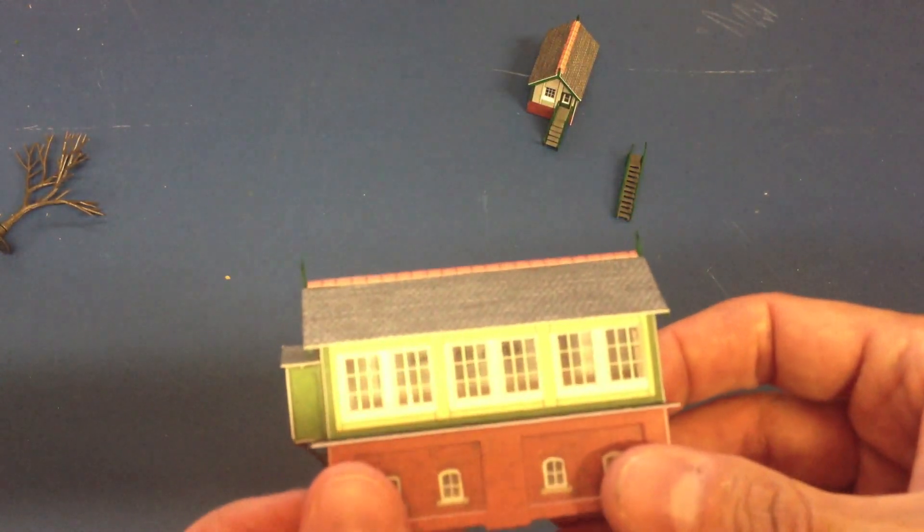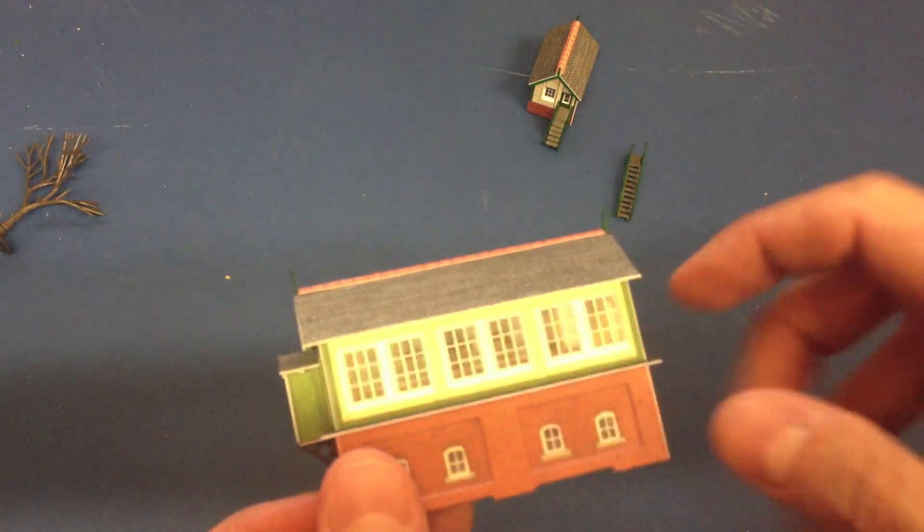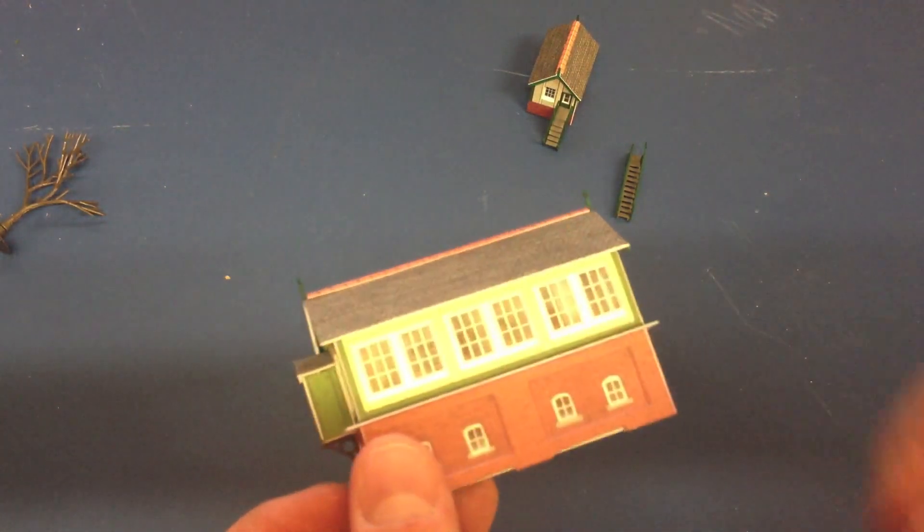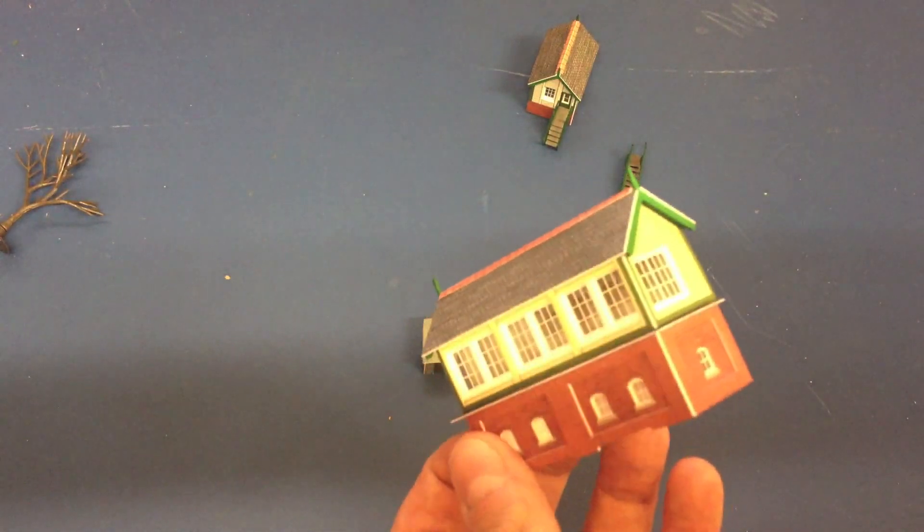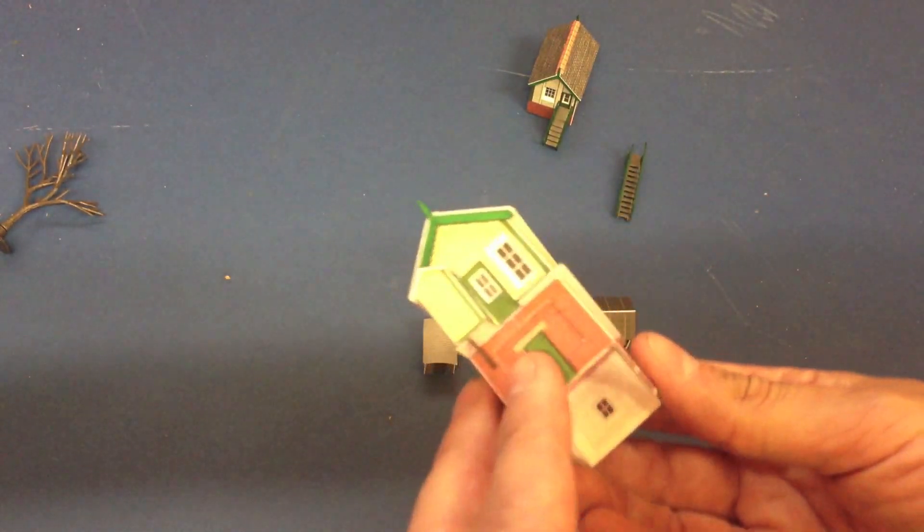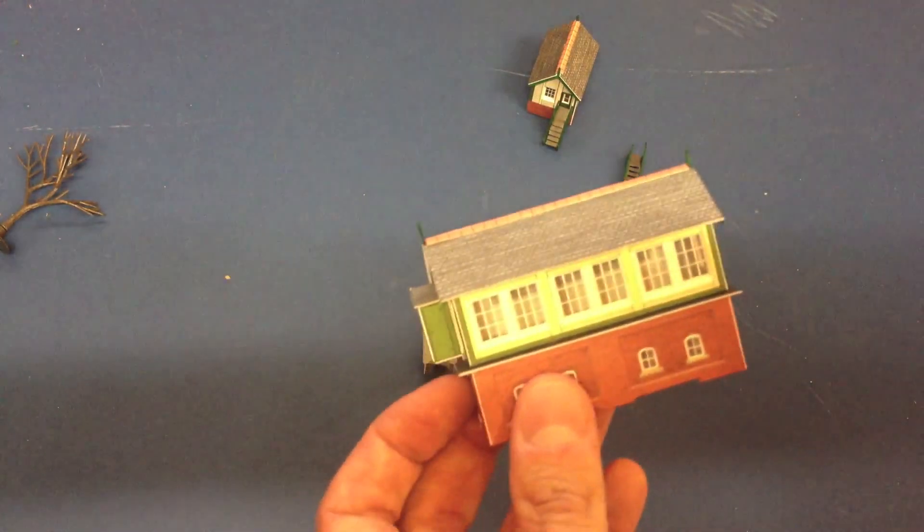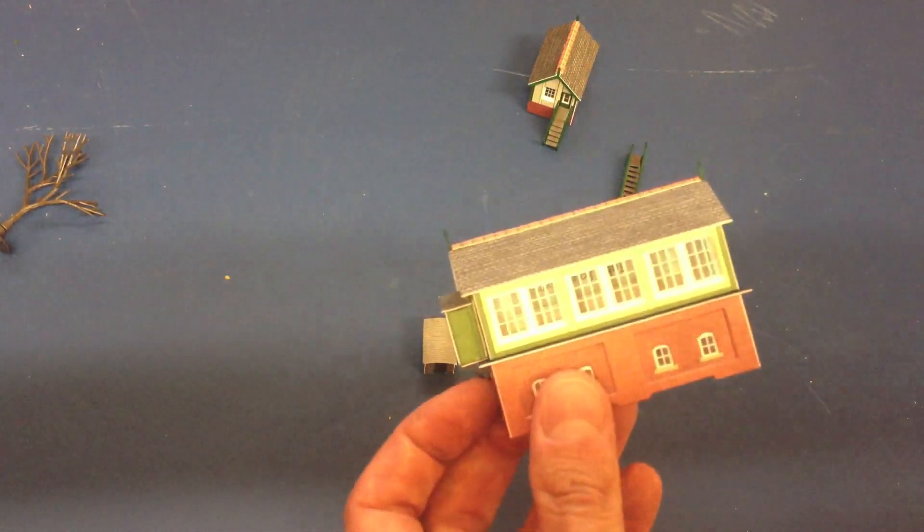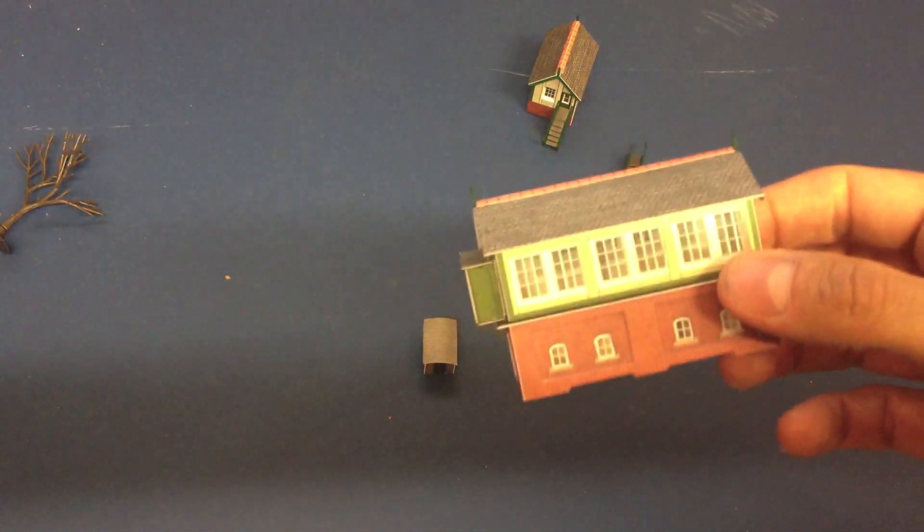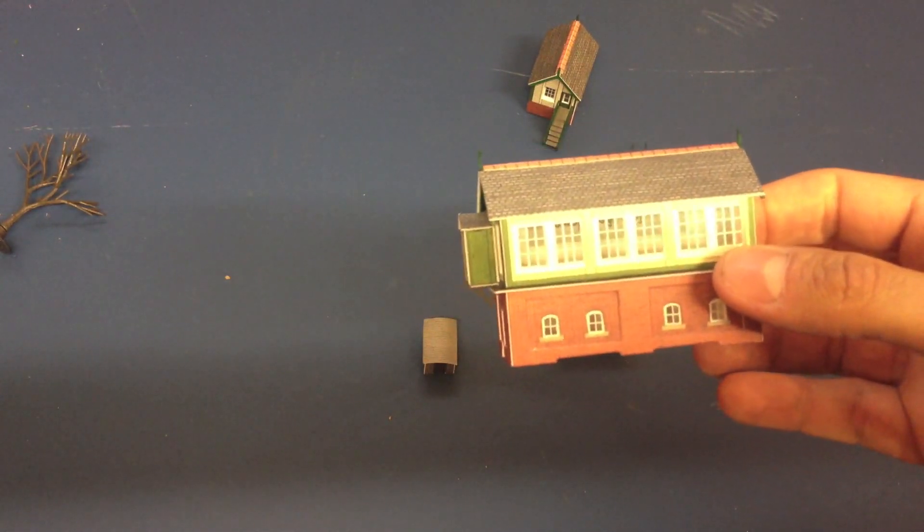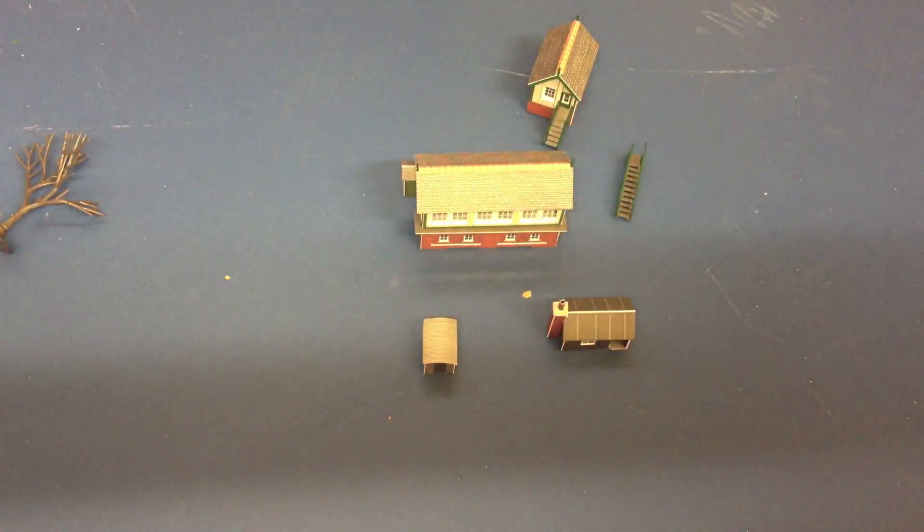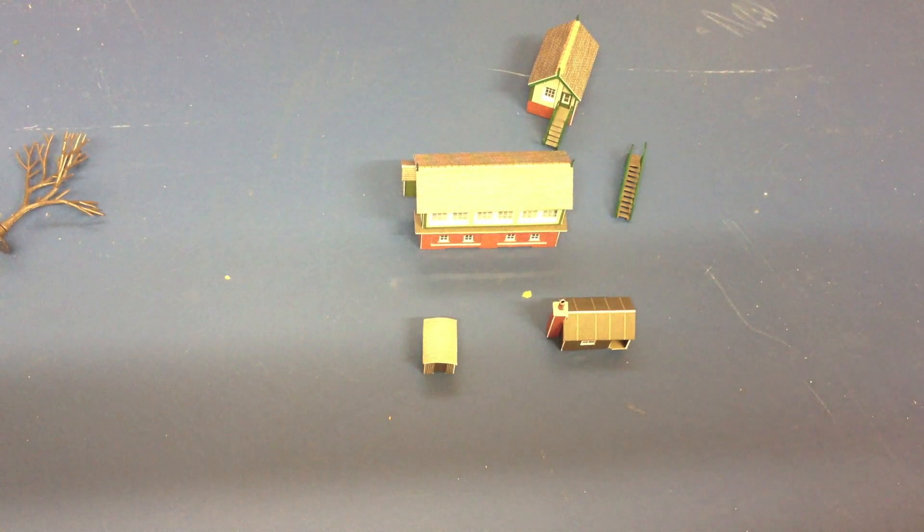You can just about see, not sure if it's coming through on camera, but you can just about see the print inside. So there's no interior basically, which on most buildings wouldn't matter. But obviously this large glazed area on the signal box, it does make a bit of a difference. So it would be nice to have a little bit of an interior in there. But I guess that's something I could add myself.